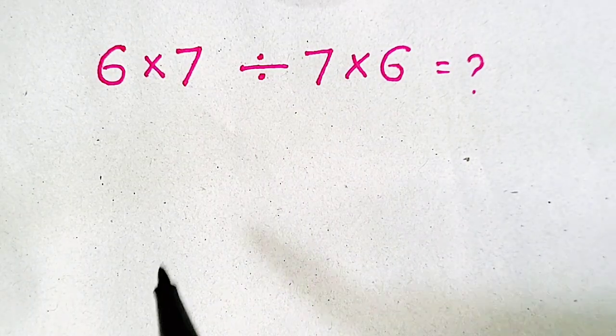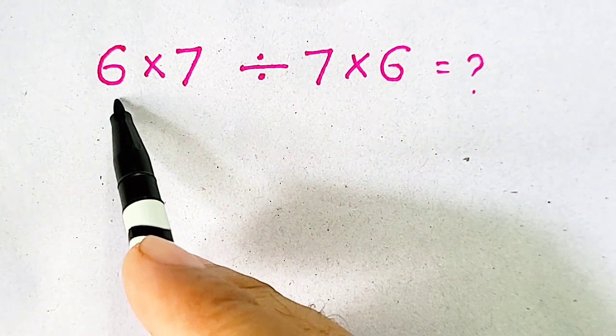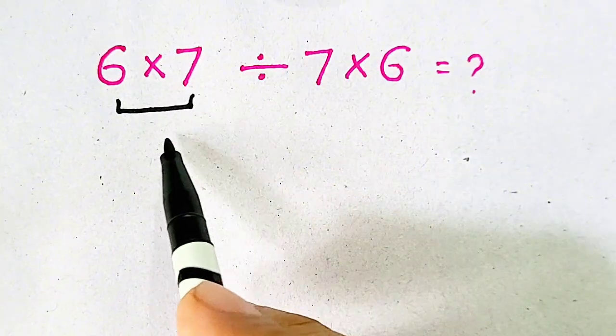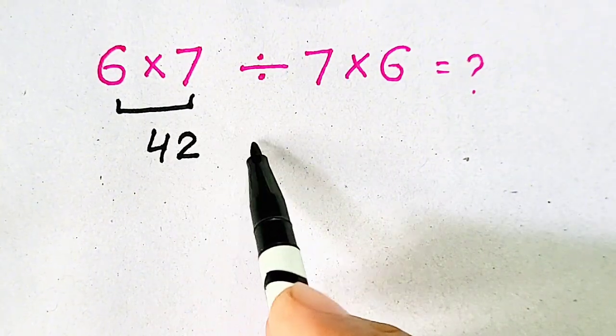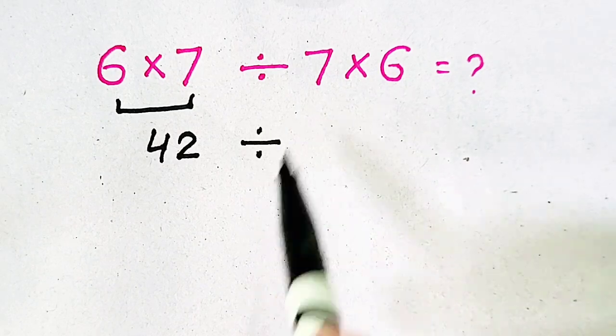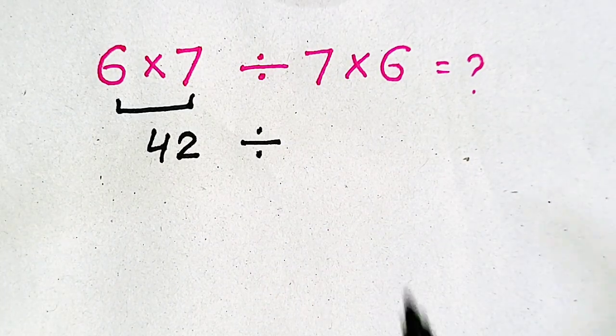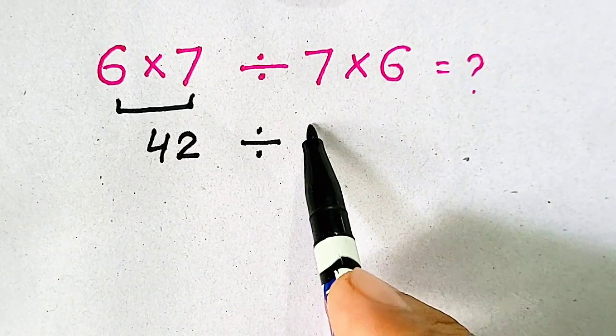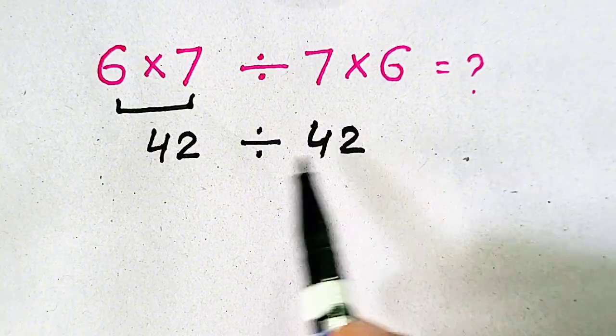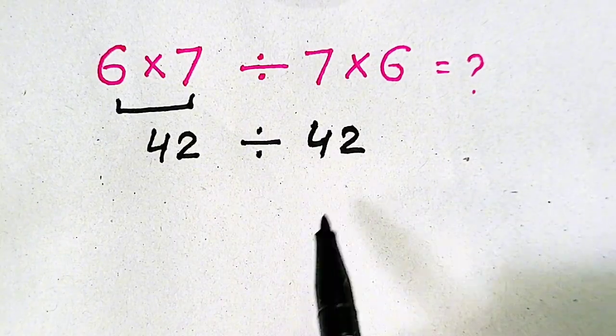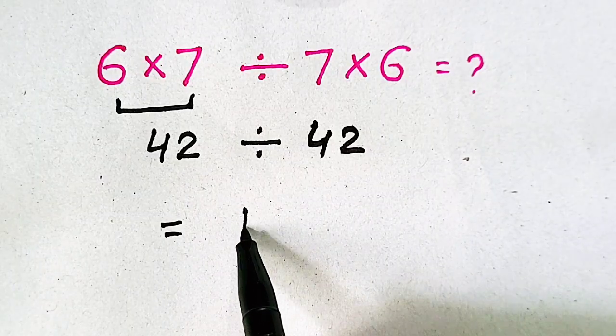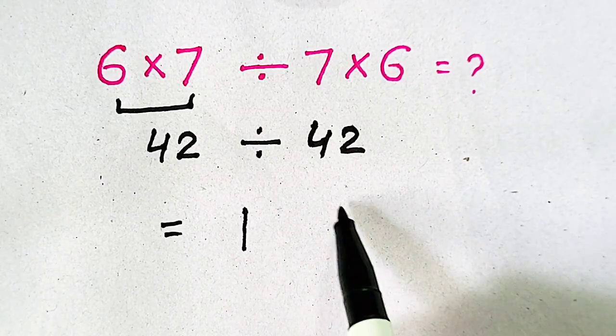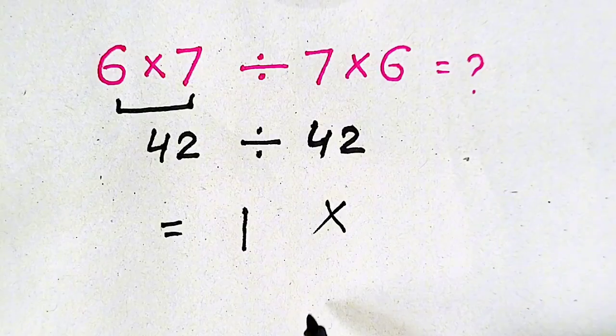So we will solve. 6 times 7 will be equal to 42, and divided by 7 times 6 is also 42. So 42 divided by 42, our answer will be equal to 1. But it is wrong.